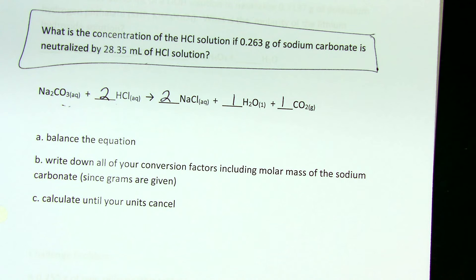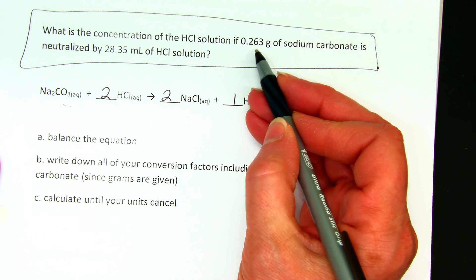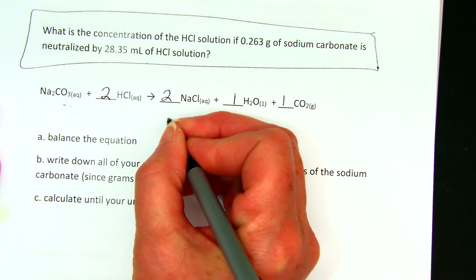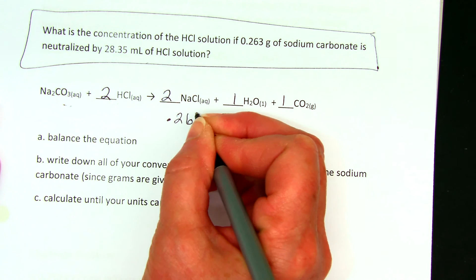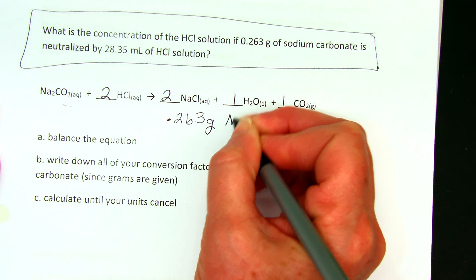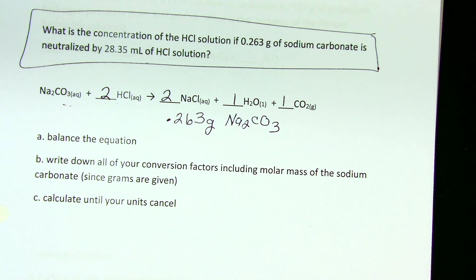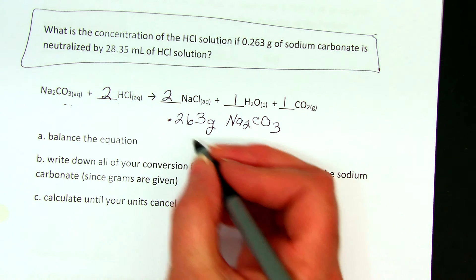Then look at this and write down your conversion factors. I know information about the sodium carbonate in grams. Since I have grams of sodium carbonate, it means that I'm going to need the molar mass of sodium carbonate. Anytime you have the mass of one of the reactants, you'll need the molar mass.